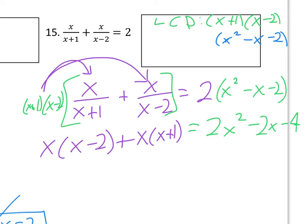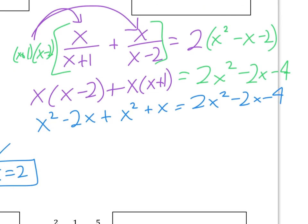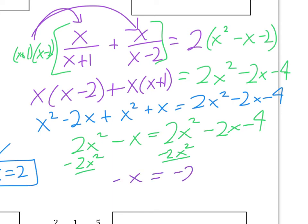Now we still need to figure out our products there. We want to figure out the x times x minus 2. So that would give us x squared minus 2x plus an x squared plus x. And that's still going to equal our 2x squared minus 2x minus 4. I would warn against doing operations to both sides before simplifying. We're going to clean up the left-hand side first. We've got an x squared and an x squared, so that would give us 2x squared. We have a minus 2x and a plus x, so that will be a minus x.